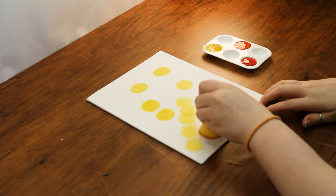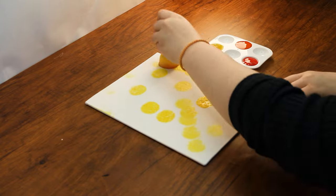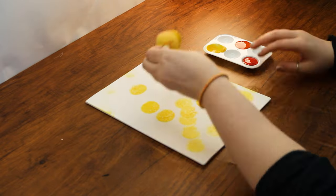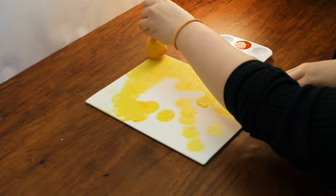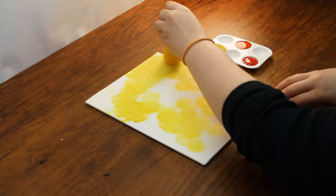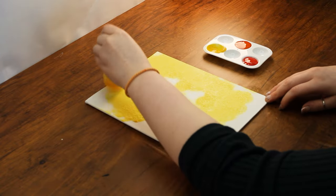We will create a background that somewhat resembles a bonfire, with the lightest color, the yellow on the edges, and the deepest shade, the red, in the center. Begin by sponging yellow paint over most of the canvas.